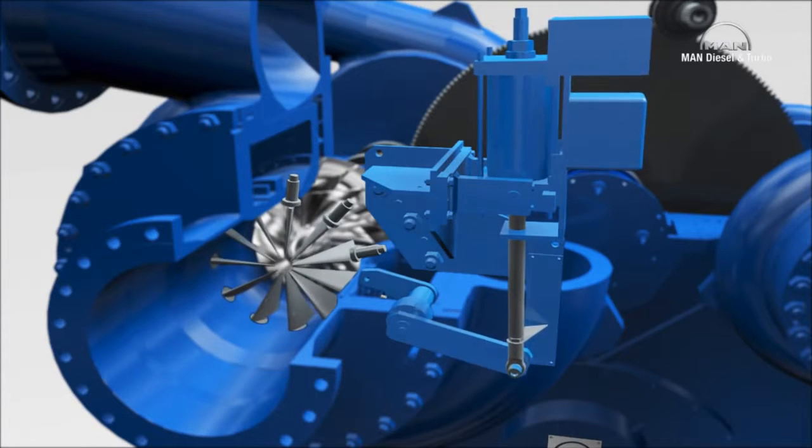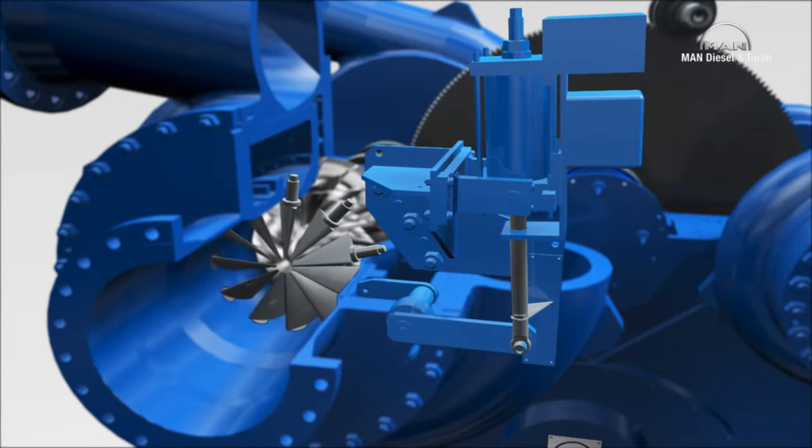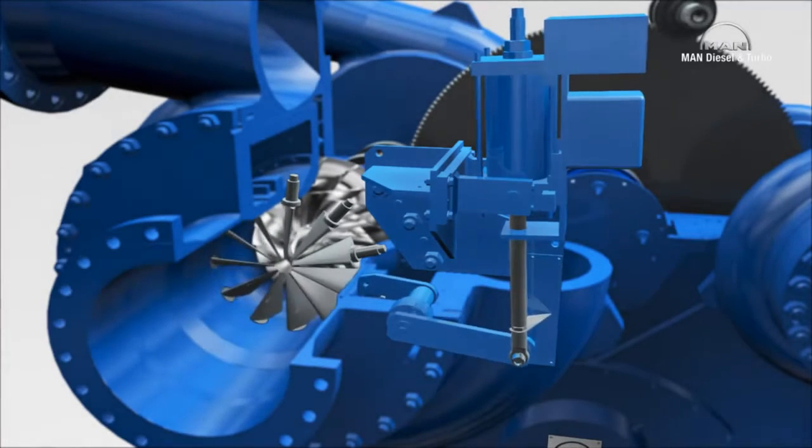Inlet guide vanes are mounted in front of the first stage of each section, here stages one and three. Their blades can be adjusted synchronously, which enables each section to be controlled individually.